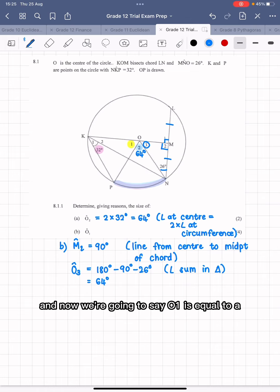And now we're going to say O1 is equal to 180 minus 64, which was O2, minus another 64, which was O3. And that is going to leave us with the final answer for O1 being 52 degrees. And our reason for that statement is angles on a straight line.